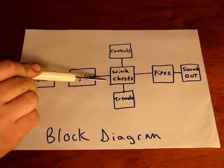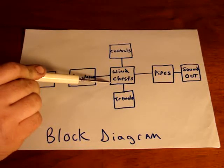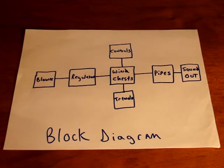Each wind chest will hold a rank of pipes. A rank of pipes is just a set, like an eight foot flute. There may be 61 pipes in the rank, which means they all sound the same. They're all the same design.